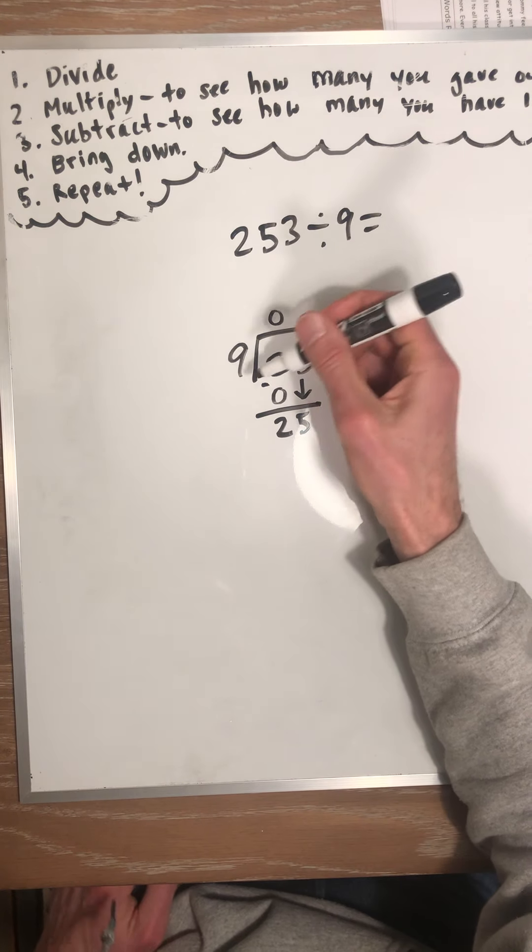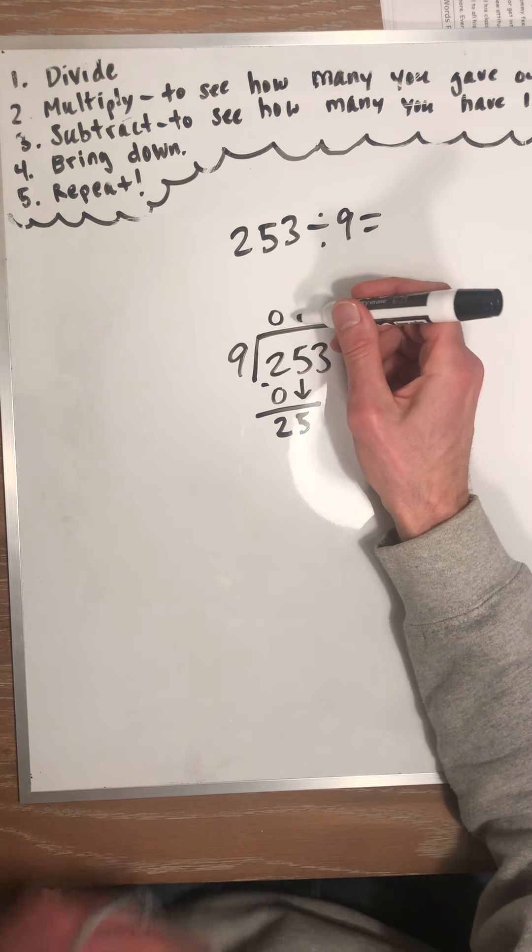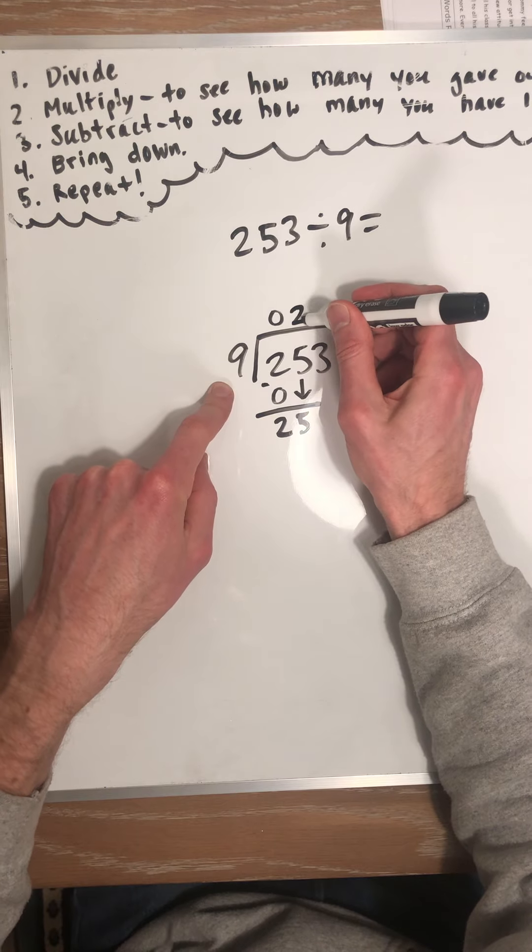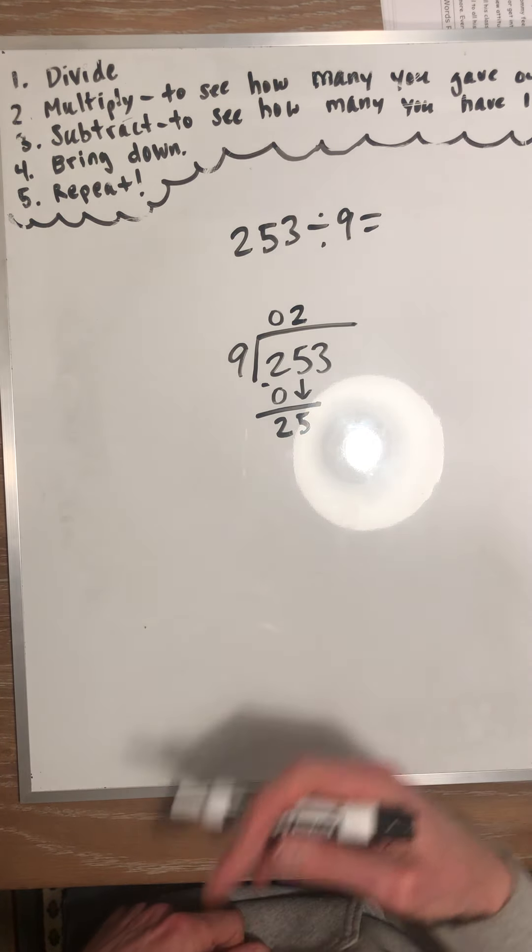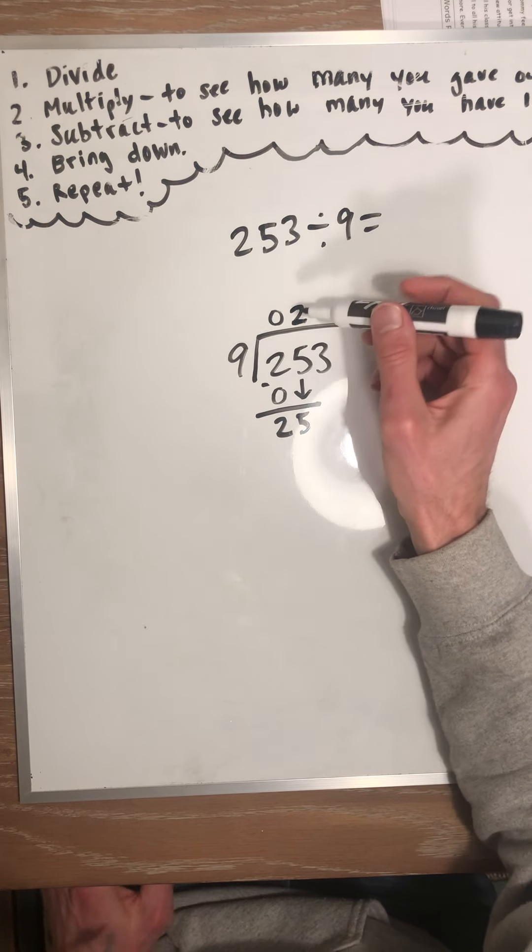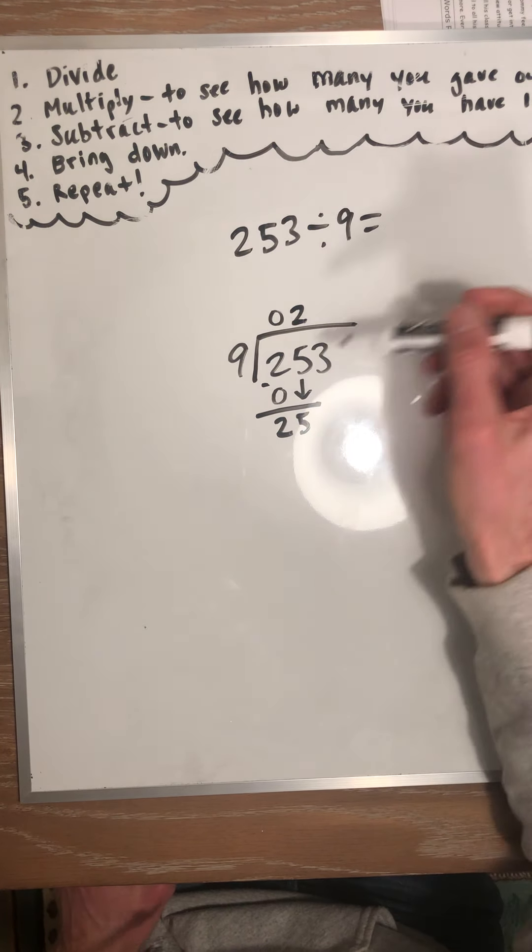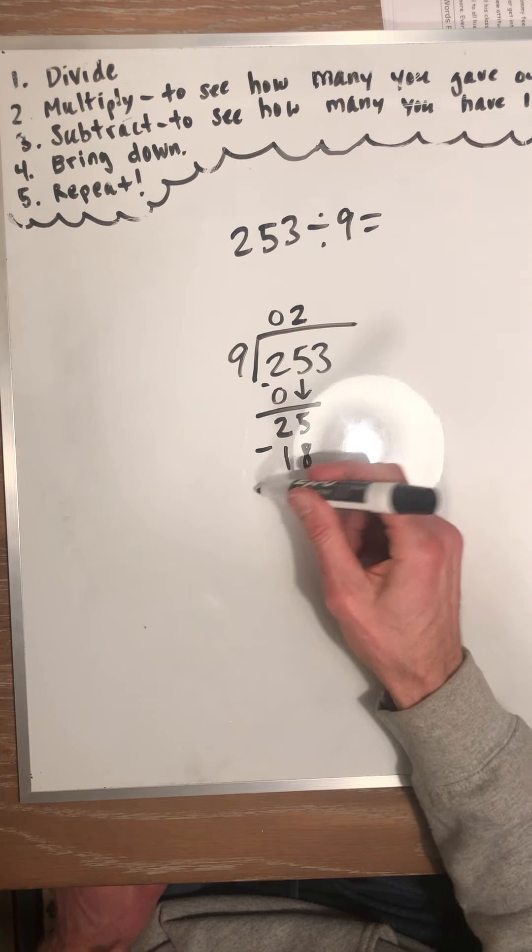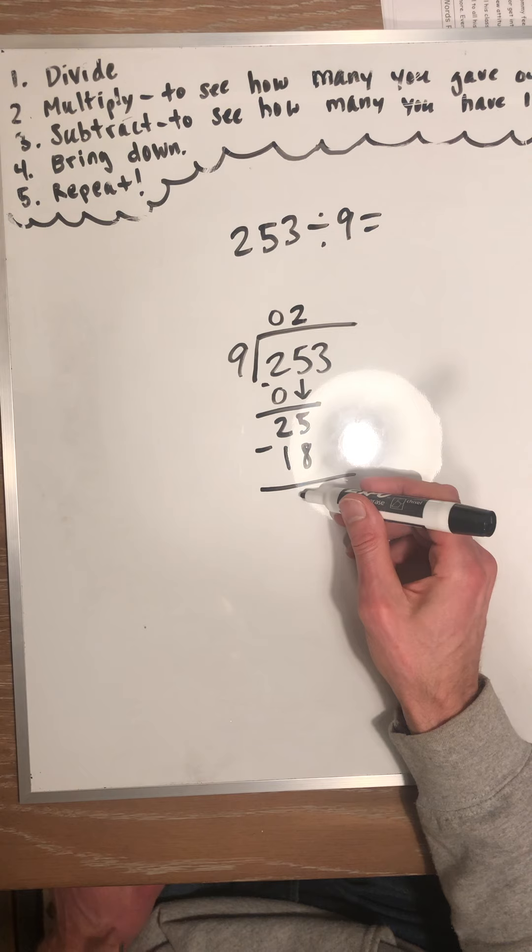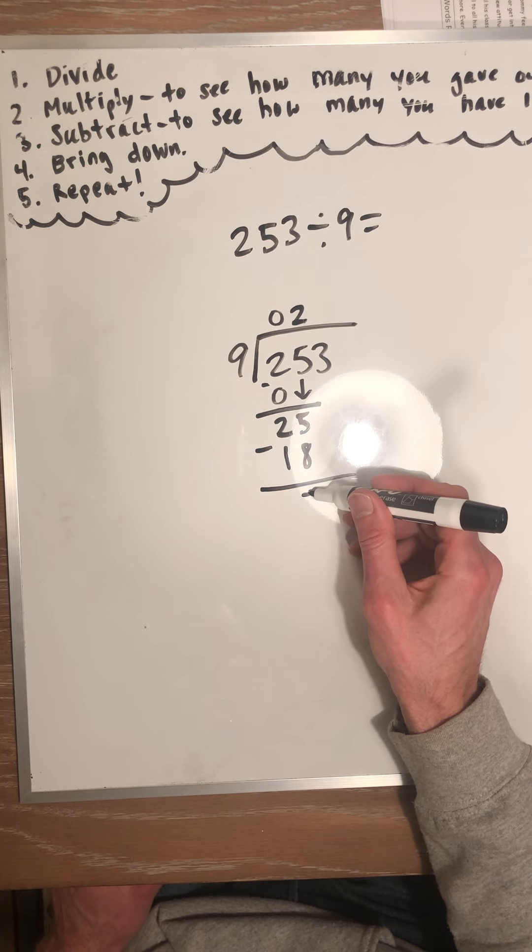So, 9 times 2 is 18. So, each one of these 9 people are going to get 2 groups of 10 pancakes. It would be like, if you're thinking of money, it would be like 2 $10 bills. And now we multiply to see how many we gave out. 2 times 9 is 18. Subtract to see how many we have left. 25 minus 18 is 7.